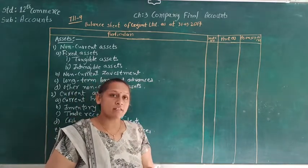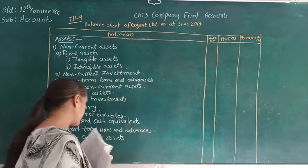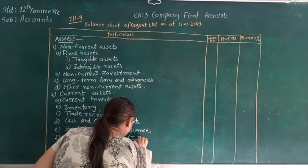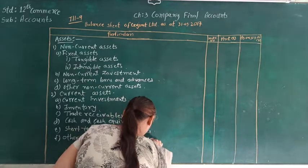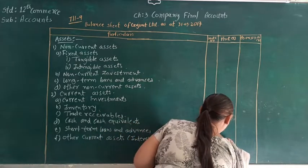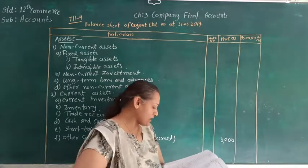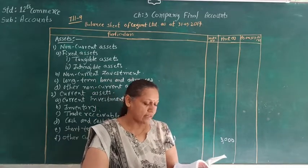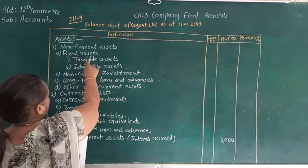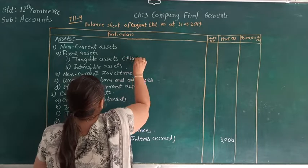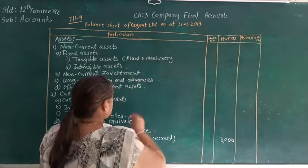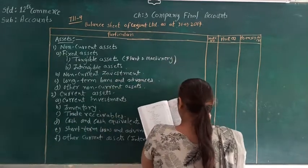Now let us see the balances given in illustration number 9. Interest accrued is given — interest accrued is an other current asset, and the amount is 3,000. After interest accrued, the other asset given to us is plant and machinery. As we know, it is a fixed tangible asset, so we will write it under the head fixed tangible asset — plant and machinery — and that is 6 lakh.